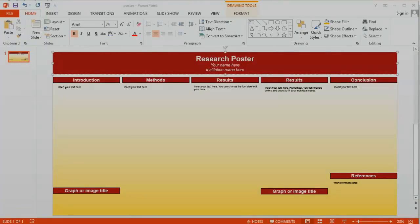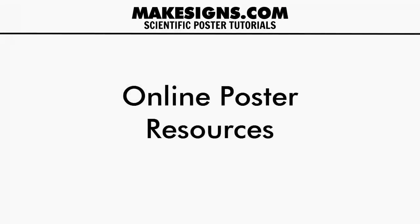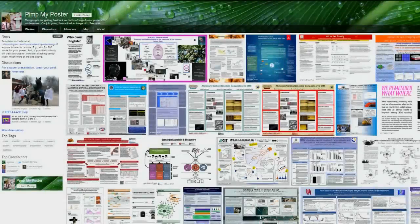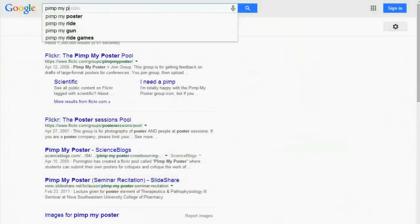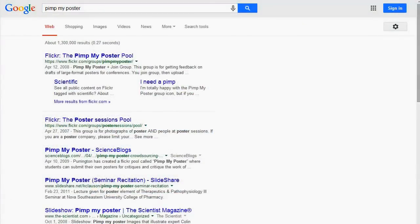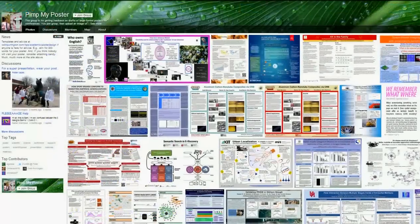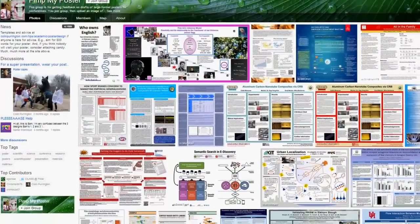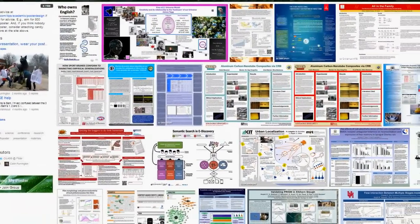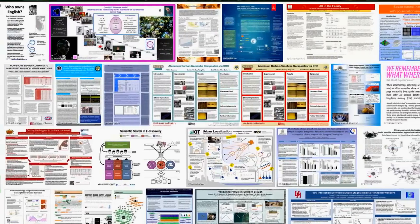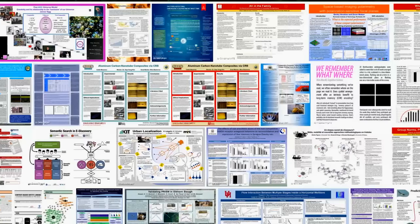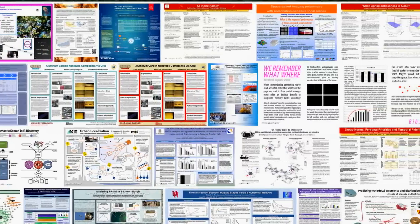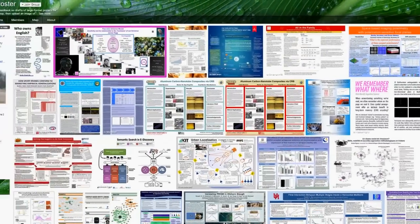Before we do that, I want to take a quick side note and show you a couple of template-related resources that you might find useful when determining what your poster should look like. The first resource is the Flickr group 'Pimp My Poster.' You can find it by searching Google or typing 'PimpMyPoster' into Flickr.com. Basically, it's a place where people upload their finished posters and get feedback from other people. I also like to use it just to get ideas for poster layouts and designs. So if you're having a brain freeze and can't decide how your poster should look, spend a few minutes browsing other people's posters for ideas.